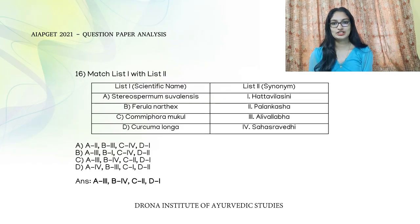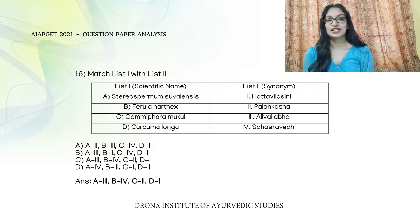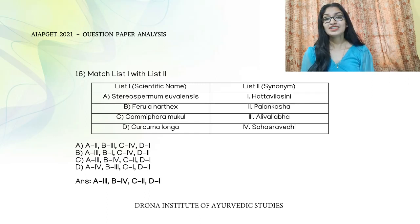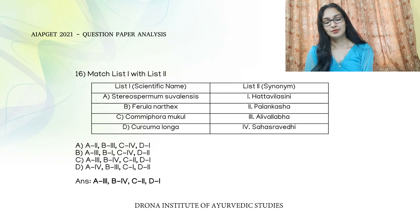The next match the following question has scientific names in list one and drug synonyms in list two. Stereospermum suavalensis is the scientific name of Patala, and Alivallabha is its synonym. Ferula narthex is the scientific name of Hingu, and Sahasravedi is its synonym. Comiphora Mukul is the scientific name of Guggudu, and Palankasha is its synonym. Kurkuma Longa is the scientific name of Haridra, and Hathavilasini is its synonym.